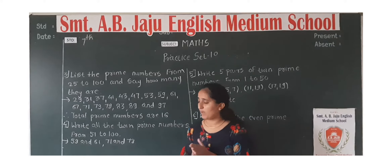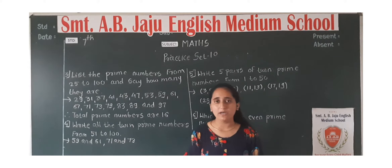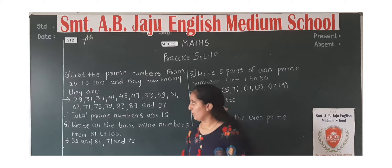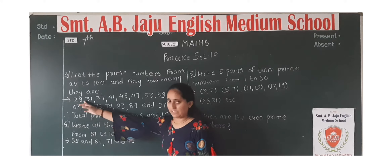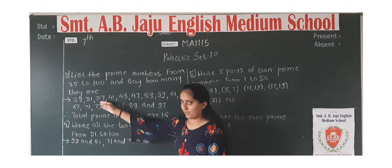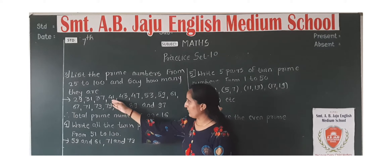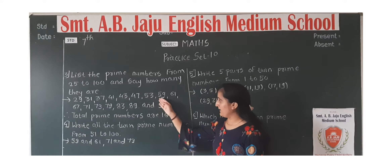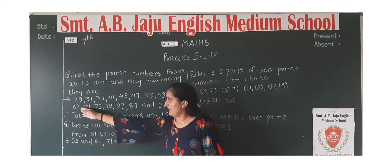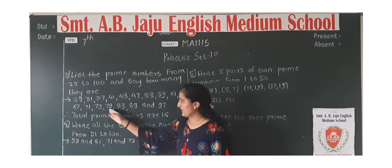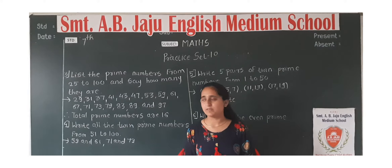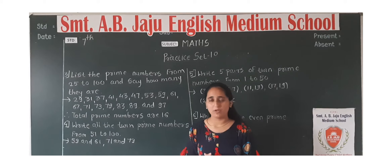Dekho, 25 to 100 ke prime numbers. A prime number is the number which is divisible by 1 and itself only. So the prime numbers from 25 to 100 are: 29, 34, 37, 41, 43, 47, 53, 59, 61, 67, 71, 73, 79, 83, 89, and 97. These are the prime numbers between 25 to 100.